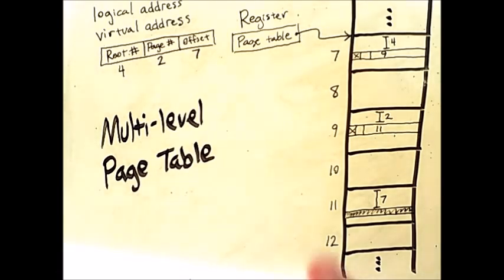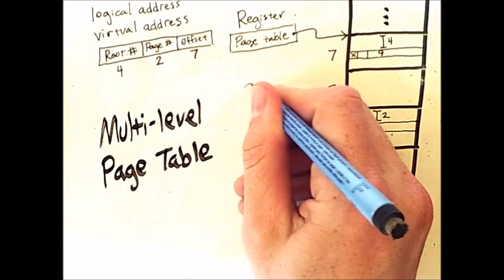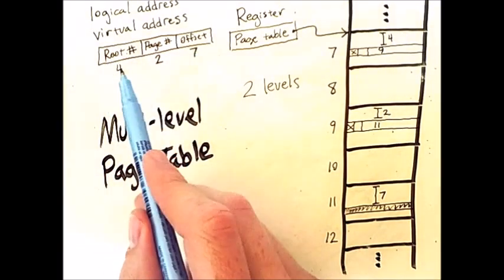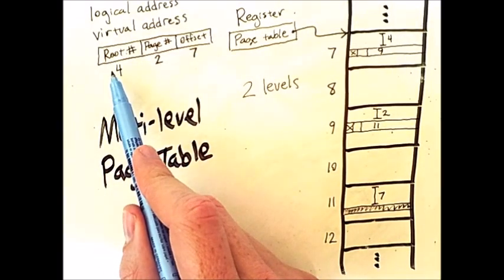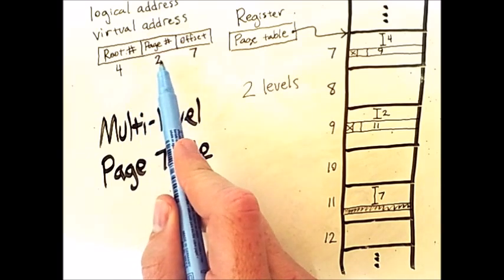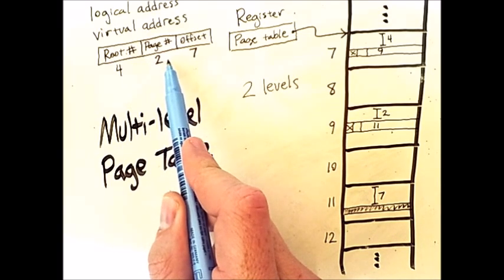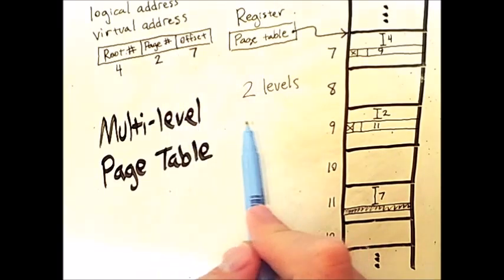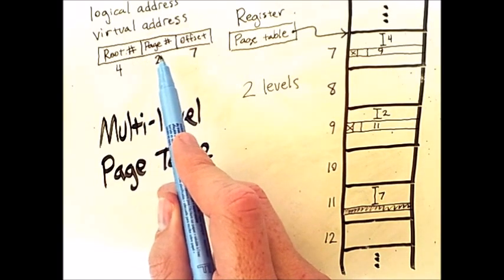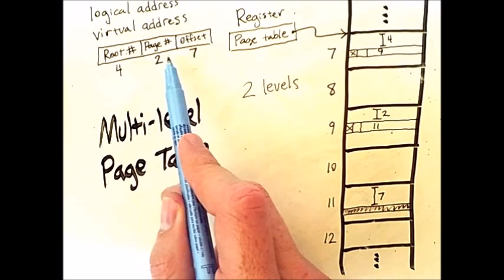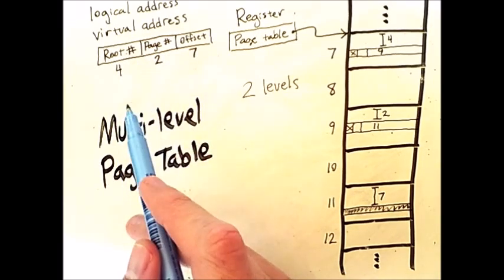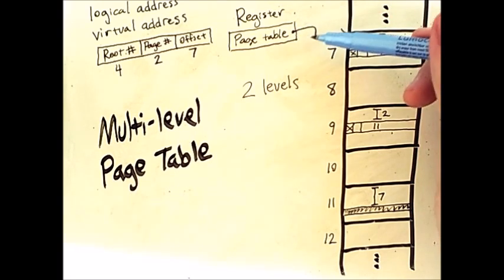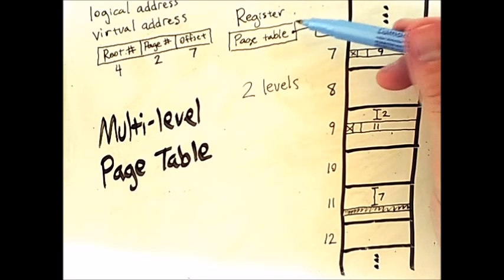This is an example of a two-level page table, and because there are two levels, my virtual address contains a root page number, and then a child page number, and then an offset. If I had more than two levels, I would have more offset page numbers in my address, but we'll just use two for this example.